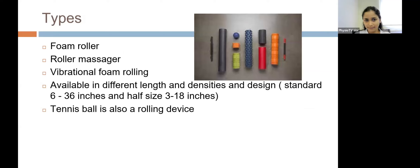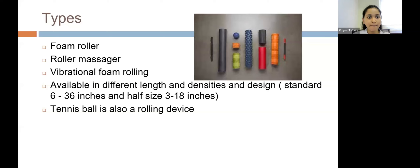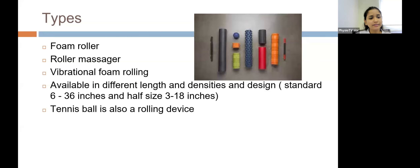Now, the types of foam rollers: first is the basic foam roller. Then a roller massager is a device where the patient or therapist uses a roll moved with the hands. Vibrational foam rolling is a foam roller with additional vibratory tools administered into it, providing both rolling motion and vibratory stimulation to the soft tissue structures. It is available in different lengths, densities, and designs — standard ranges from 6 to 36 inches and half-size from 3 to 18 inches. Even a tennis ball is also a rolling device.